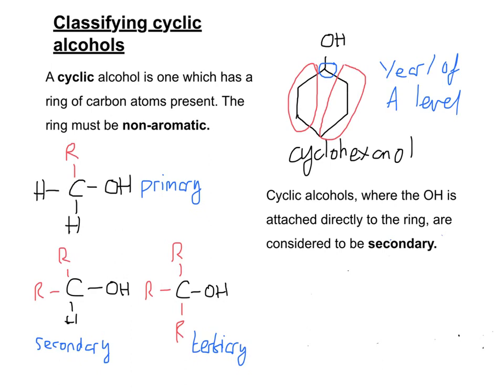So if we were to take a ring structure and draw three slightly different versions, let's say this version had a carbon with an OH coming off it and two hydrogens like that, that would be primary because you'd have one R group, which would be the ring.